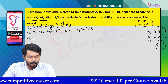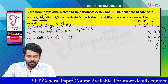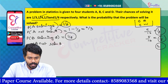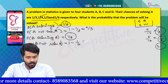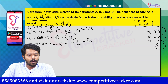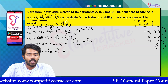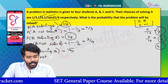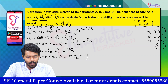What is the probability of B solving the problem? That is 1 by 4. Therefore, probability of B not solving the question is 1 minus 1 by 4. Not solving the question — probability of C: 1 by 5. Therefore, probability of C not solving the question is equal to 1 minus 1 by 5, which is equal to 4 by 5.